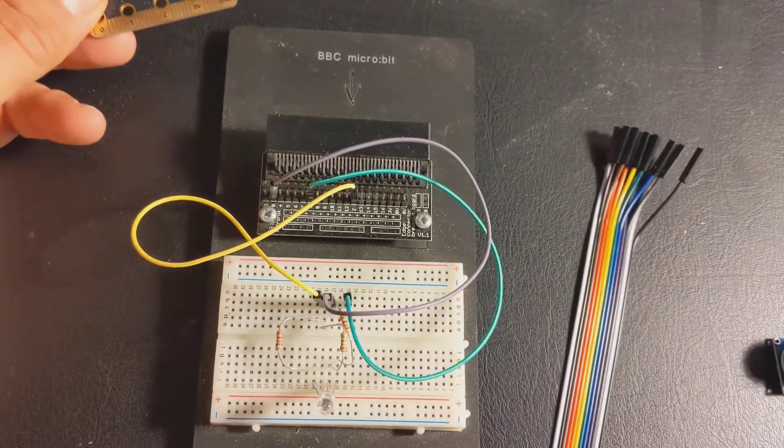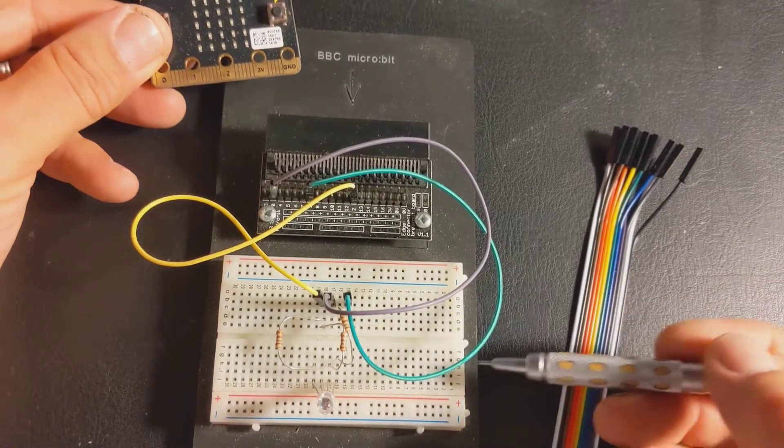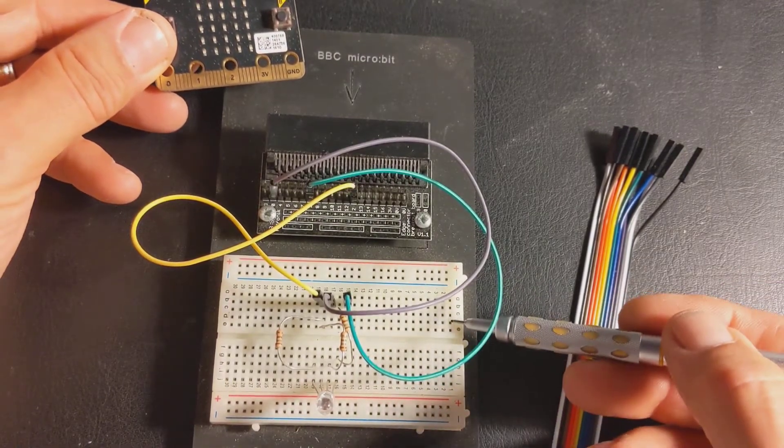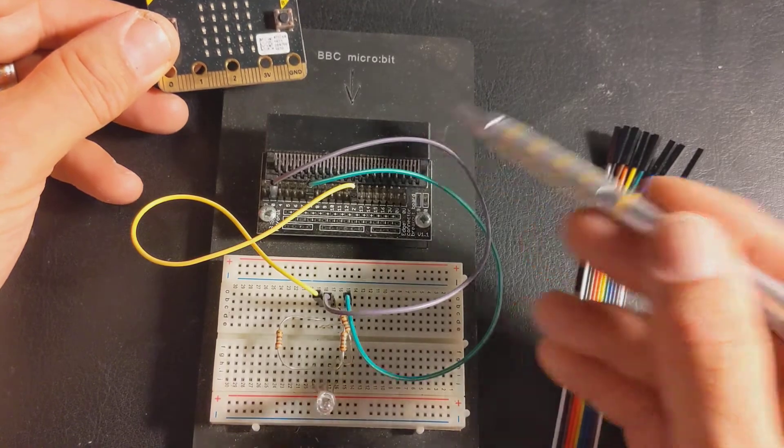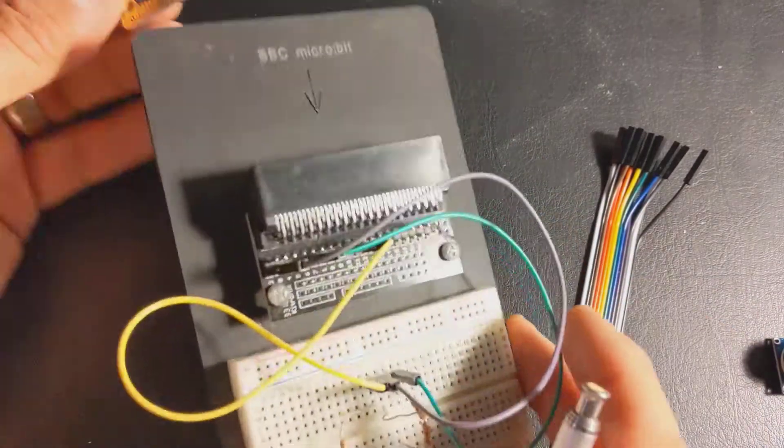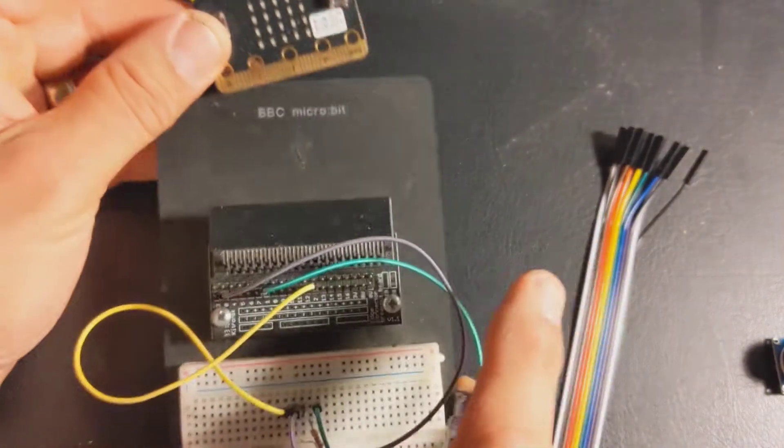So I'm going to use this thing called a prototyping system. Now this is a piece of what we call breadboard. I'll try and explain how that works in a minute. And the end of this thing here is called a lift connector, a low insertion force connector.